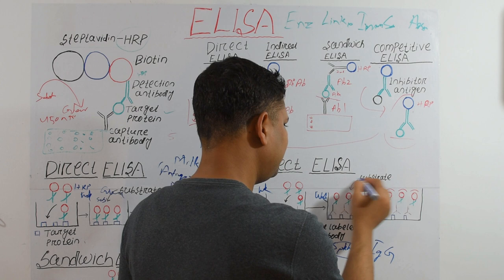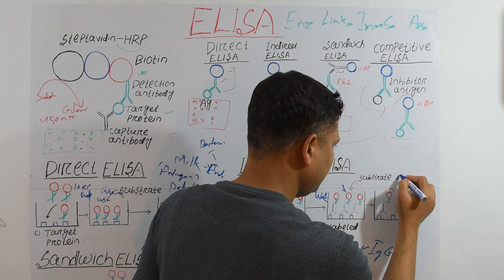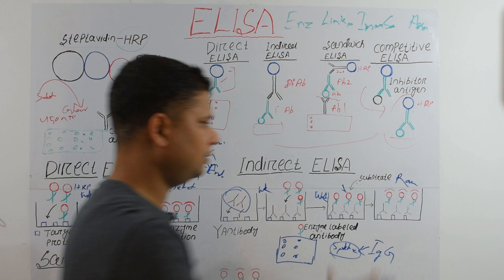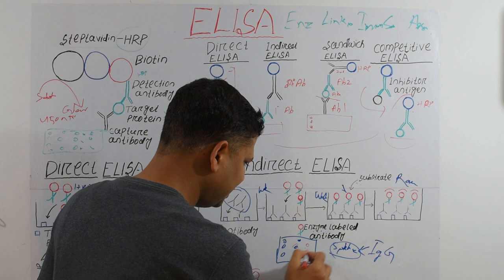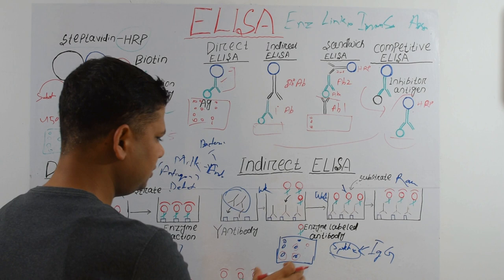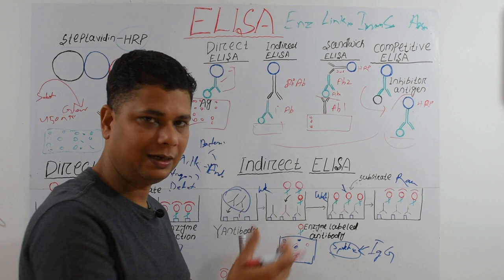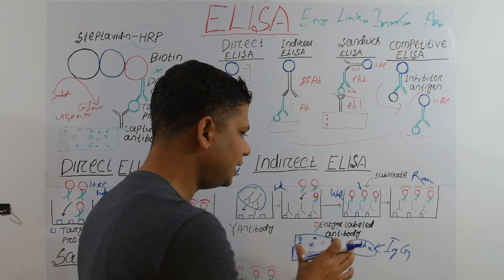We detect the reaction using a multiwell plate reader. If people have antibodies against the spike protein, those wells will glow, and we can find out how many antibodies are present and which people have them.